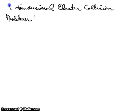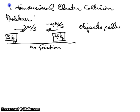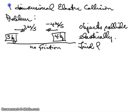So let's say we have two objects. We have three kilograms here moving this way at three meters per second, and we have another object here, four kilograms, moving at minus four meters per second. This is a frictionless surface. The objects collide elastically, and we need to find their final velocities, V1 final and V2 final.